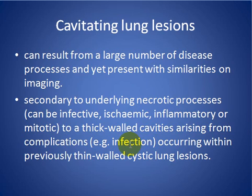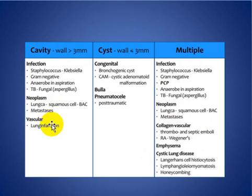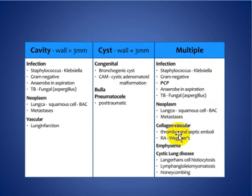Here is the differential diagnosis of the cavitary lung region. If it is thick-walled, causes include infection such as staph or anaerobic infection, TB, neoplasm, or vascular causes such as infarction. If thin-walled — less than three millimeters — it may be due to a cyst. Lesions can be multiple if due to infection, neoplasm, collagen disease, emphysema, or cystic lung disease such as Langerhans cell histiocytosis.